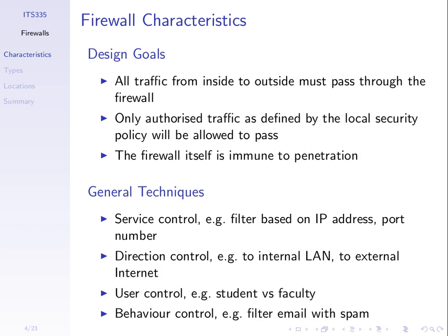Behaviour control looks at the actual content of data being sent — for example, spam filtering on outgoing email. Even if email is allowed through the firewall, the firewall may check the content of the message. If associated spam software thinks the email contains a virus or spam, it blocks it. So we can control traffic based on addresses and port numbers, direction, user identity, and content.